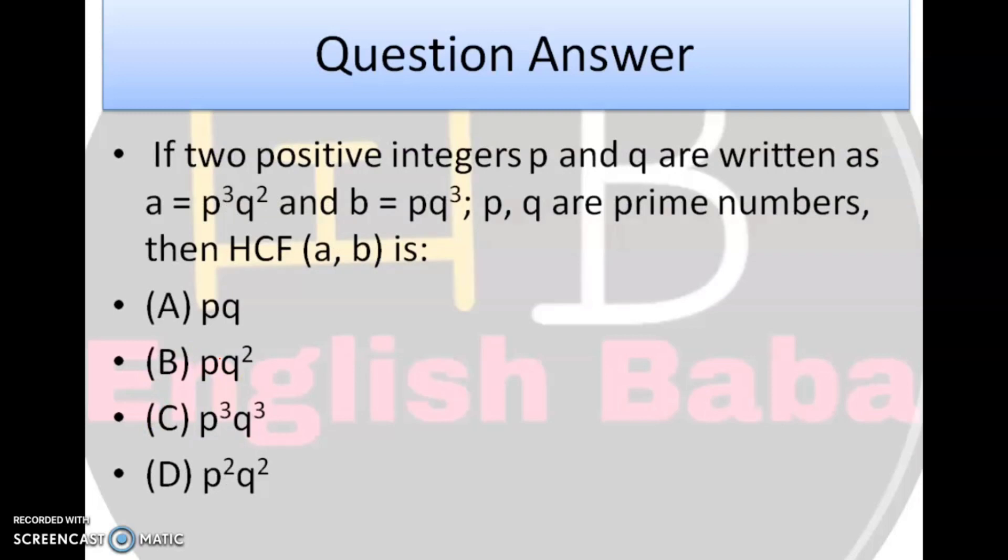Next question. Similar hai pehle jaisa, if two positive integers P and Q are written as A equals P^3 Q^2, B equals P^3 Q, P or Q dono prime hai, patafat se pehle jaise solve kijiye, you will get your answer as P^3 Q.